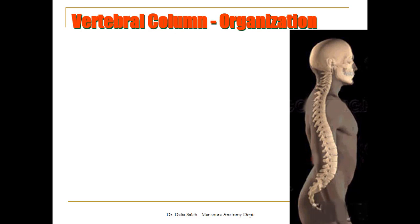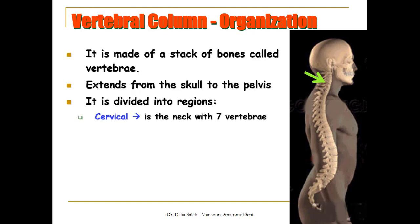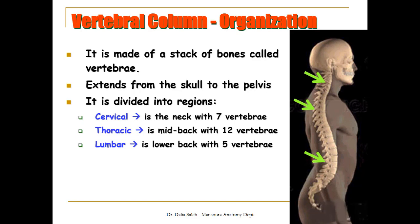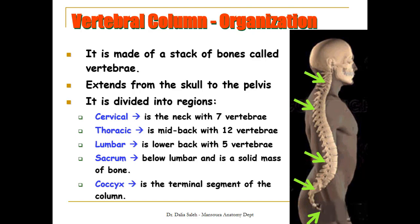For the organization of the vertebral column, as you can see from this diagram — a side view of the spine — the vertebral column is made of a stack of bones called vertebrae. It extends from the skull down to the pelvis and is divided into regions: the cervical region with seven vertebrae, the thoracic region with 12 vertebrae, the lumbar region with five vertebrae, and finally the sacrum, which consists of five fused vertebrae, and the coccyx, which is the terminal segment.